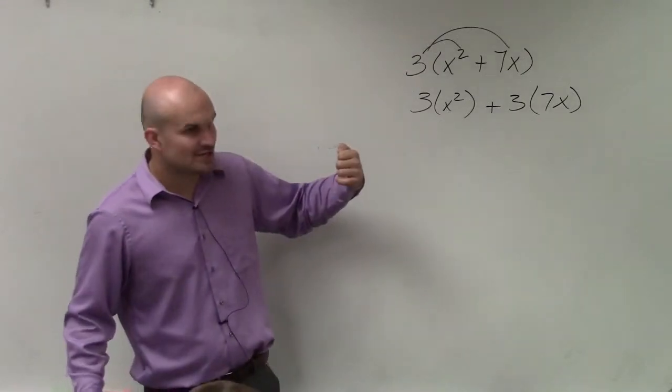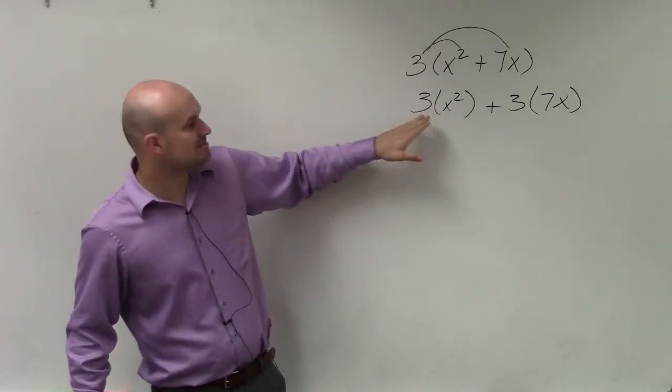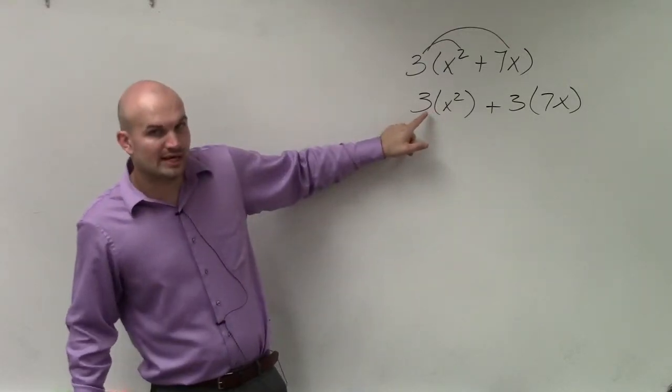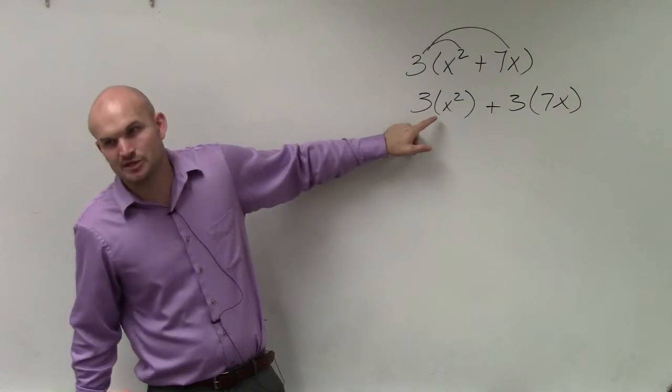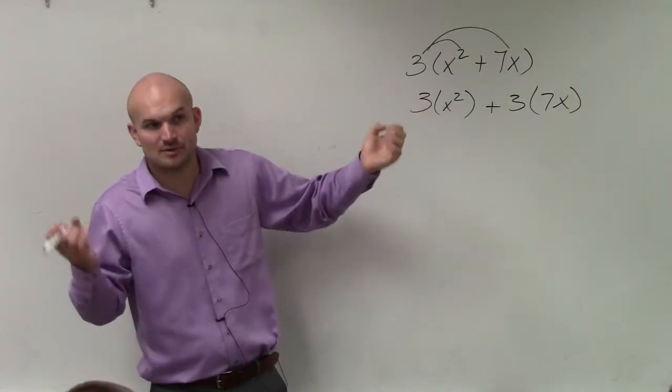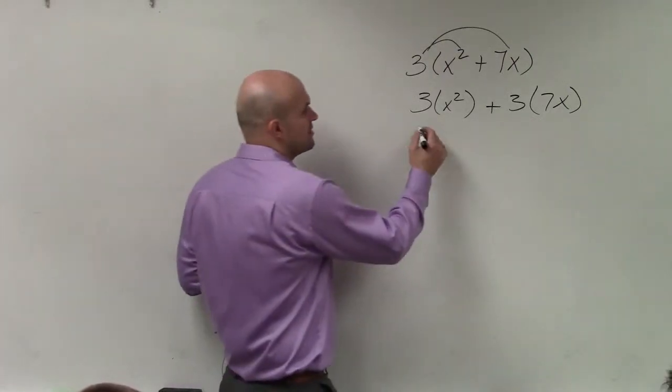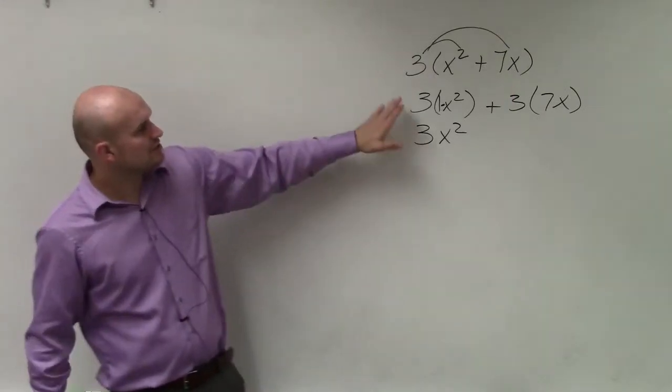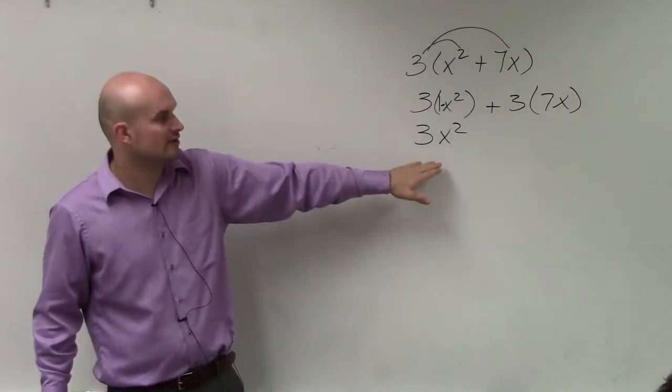But for multiplication, all we simply do is multiply the coefficients and multiply the variable factors. Well, remember 3 has a variable factor of x to the 0, right? Well, x to the 0 times x squared, remember you add the exponents, 0 plus 2 is still going to give us 3x squared, because this one has a coefficient of 1, all right? So you multiply the coefficients, multiply the variable factors.